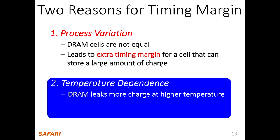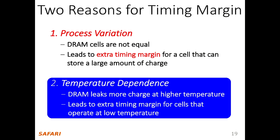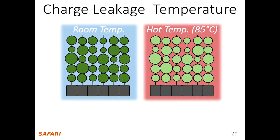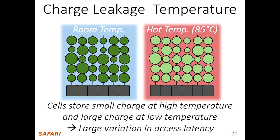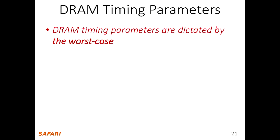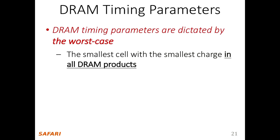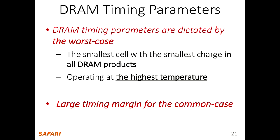The second reason for timing margins is temperature dependence. DRAM leaks more charge at higher temperature, meaning you have less charge when operating at high temperature, making it slower. This leads to extra timing margin for cells operating at low temperature, since at low temperature you have a lot of charge in the cell. At room temperature there is small leakage; at 85 degrees Celsius there is large leakage, meaning theoretically you can operate much faster at low temperature.